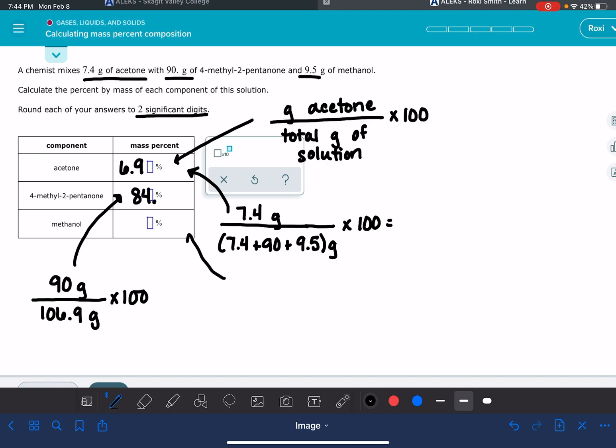And then last but not least, the methanol: 9.5 grams of methanol divided by the total mass of the solution (106.9 grams) times 100. 9.5 divided by 106.9... and when you're all done with all of these, this last one is 8.9.